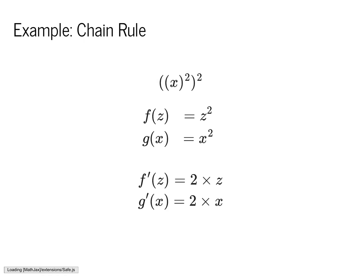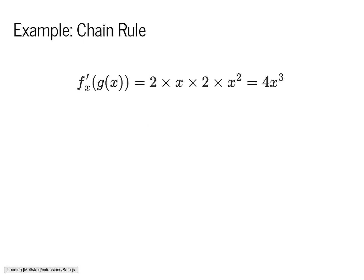As a second example, consider x squared squared. This can be broken into two elementary functions: g of x equals x squared, and f of z equals z squared. Using standard symbolic differentiation, f' of z equals 2 times z, and g' of x equals 2 times x. Applying the chain rule, the derivative with respect to x equals 2 times x times 2 times x squared, which leads to the symbolic form 4x to the third. I'll leave it to the listener to verify that the backward version would compute the same value.